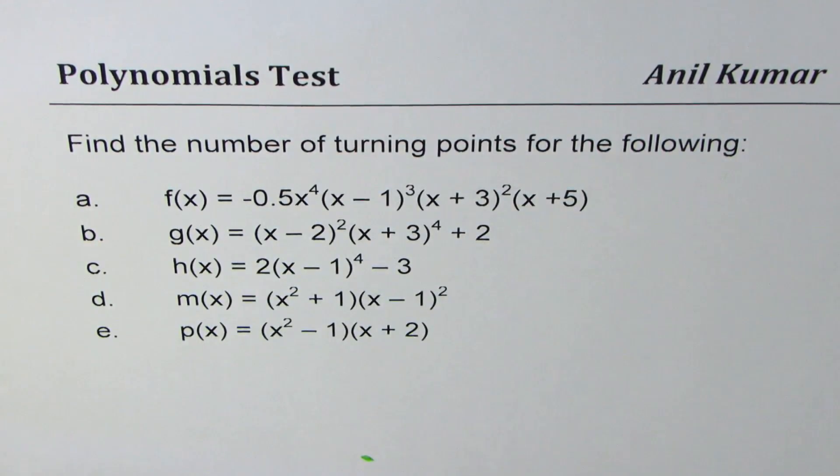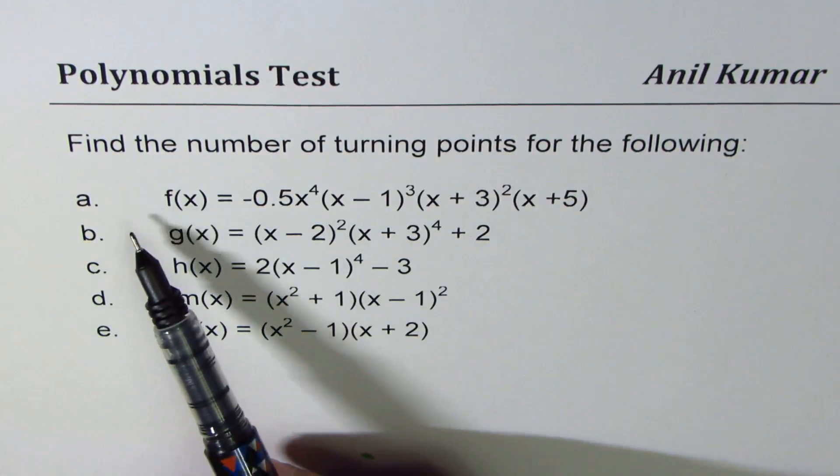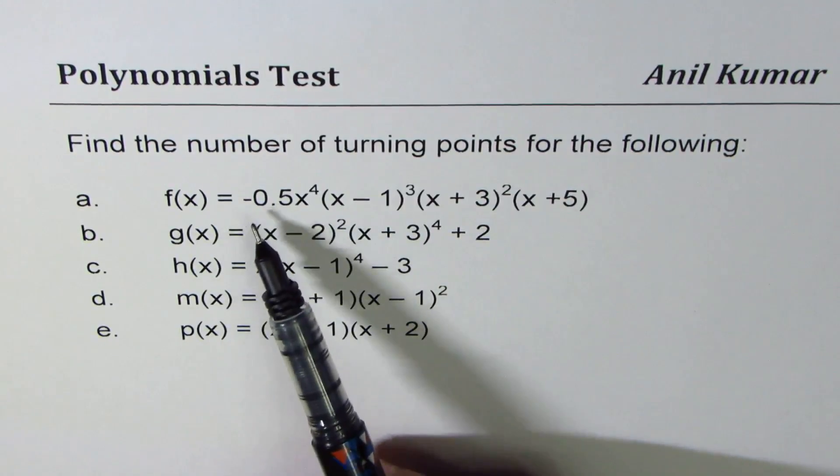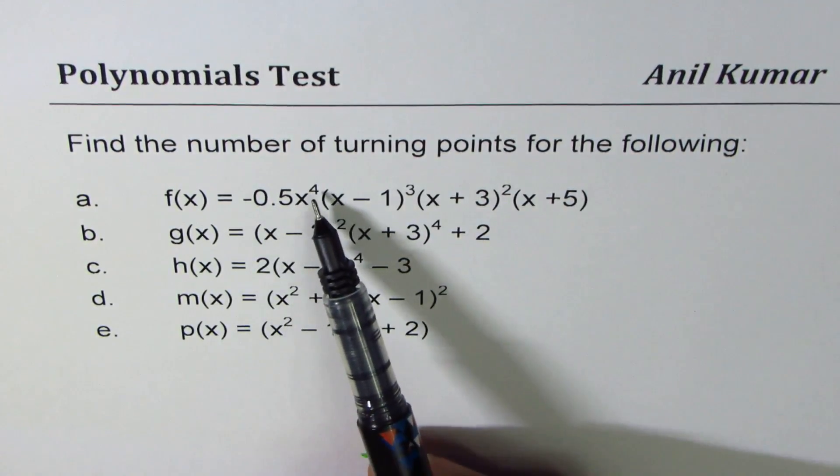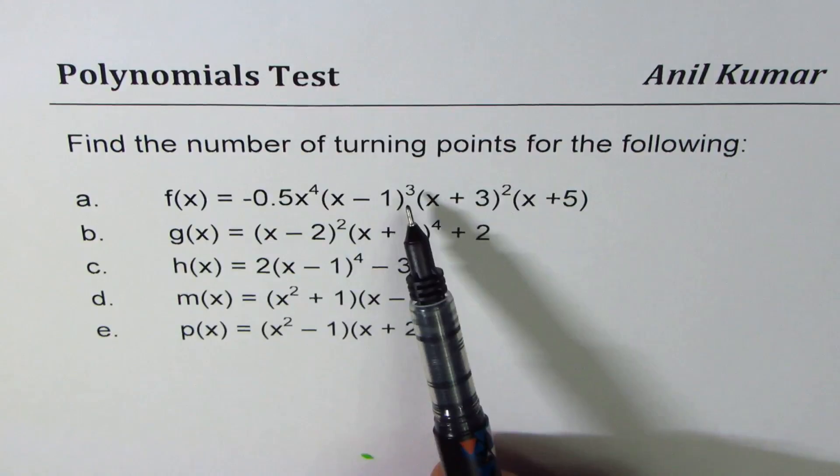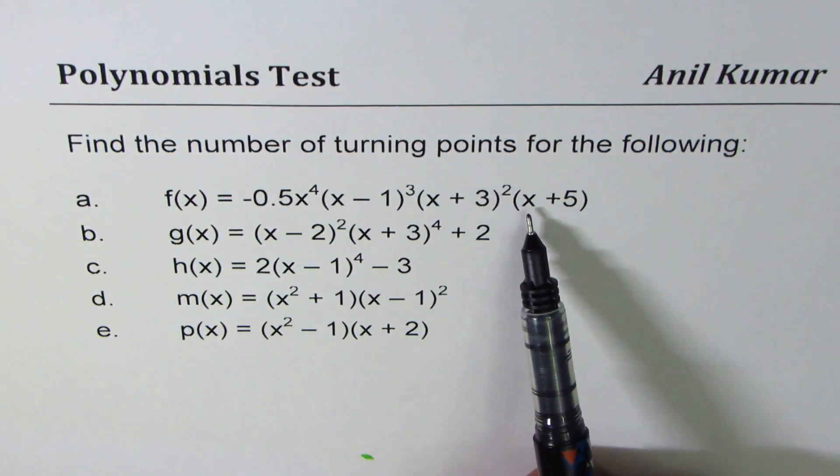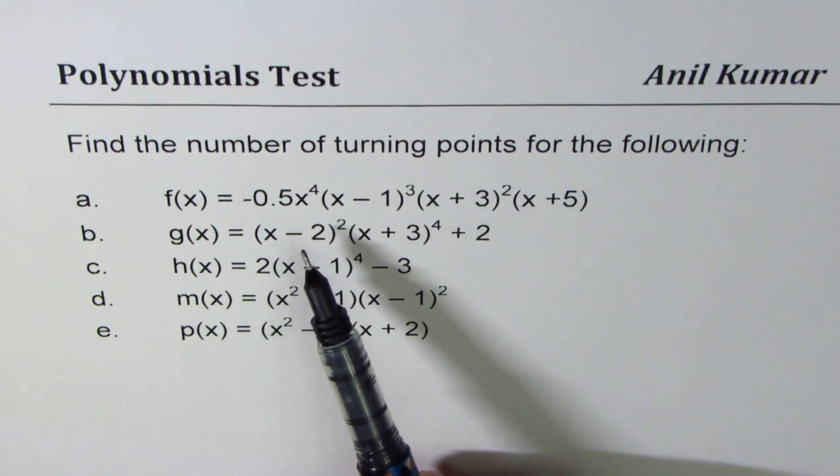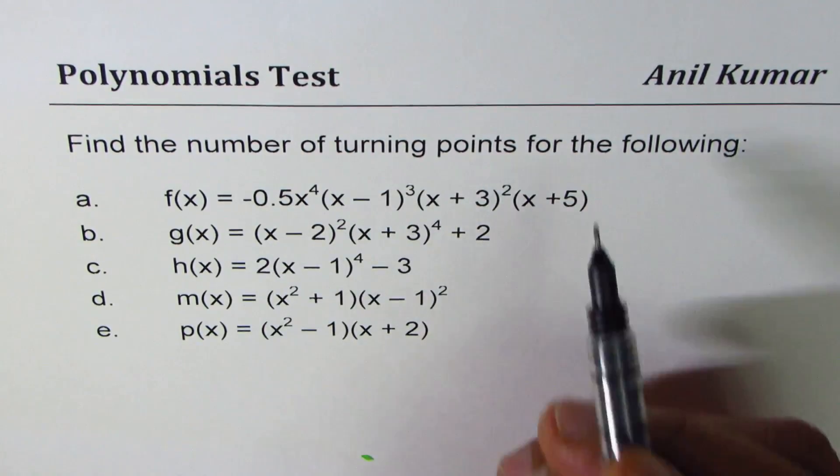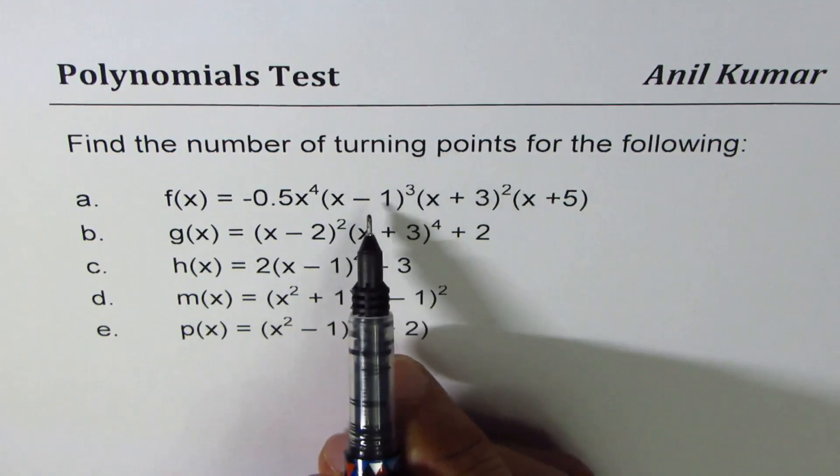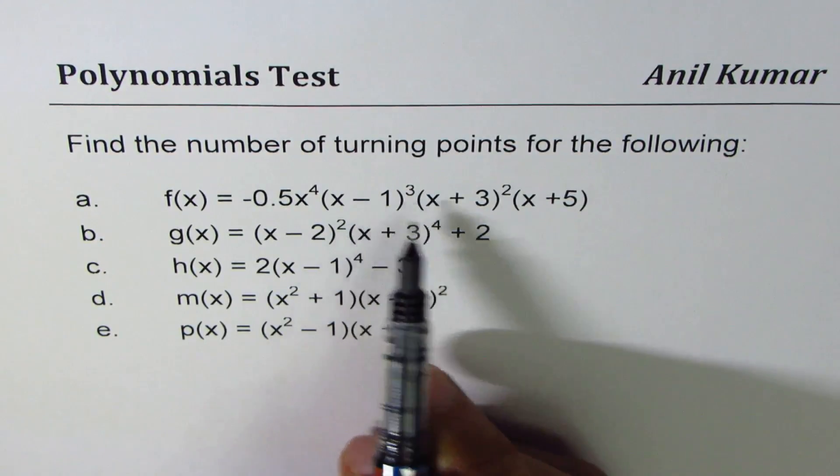The first function is f(x) equals -0.5x to the power of 4, (x - 1) to the power of 3, (x + 3)², and then (x + 5). The number of turning points will be how many? Number of turning points really depend on number of zeros and number of even zeros.